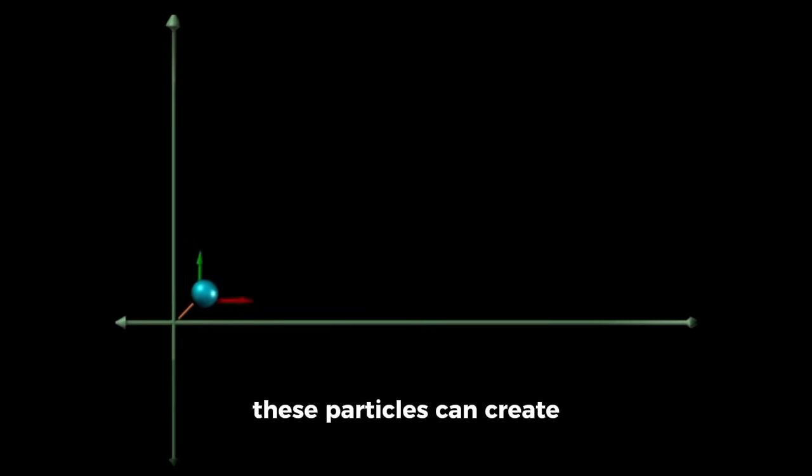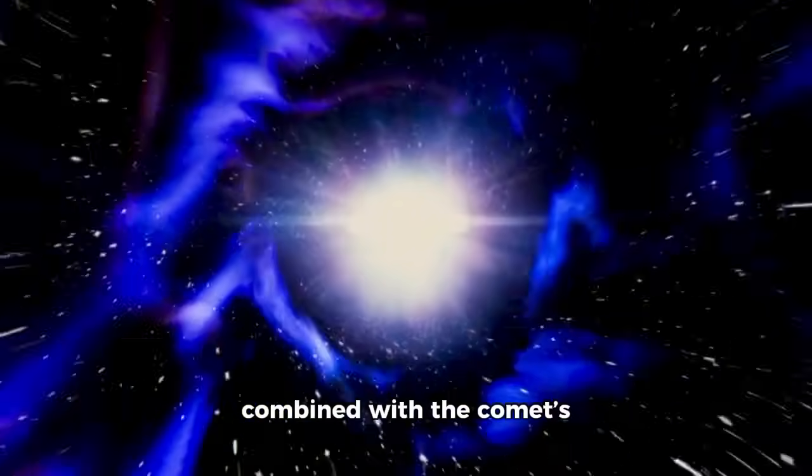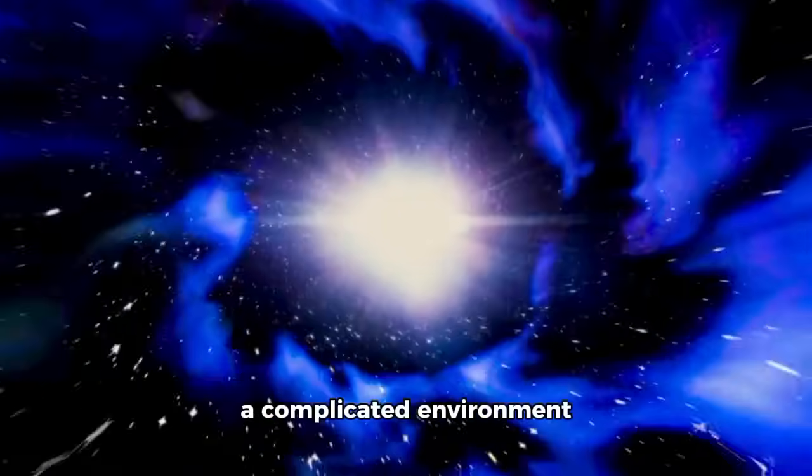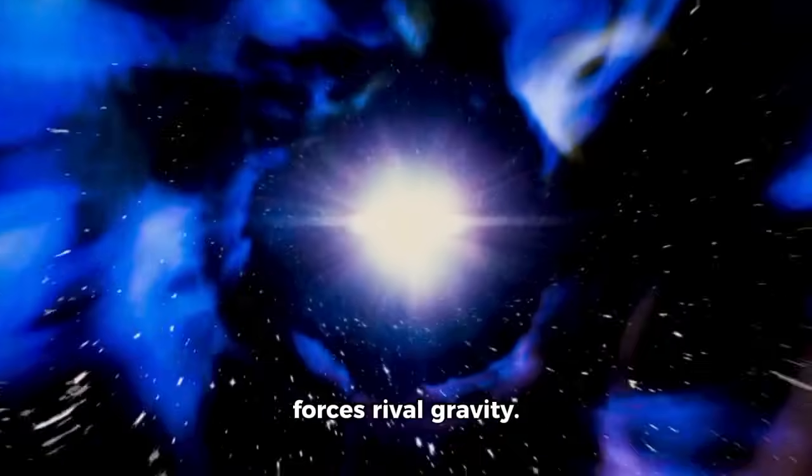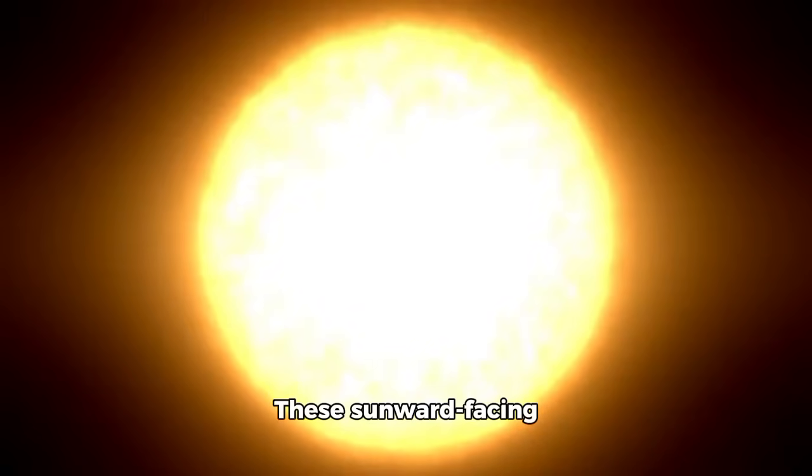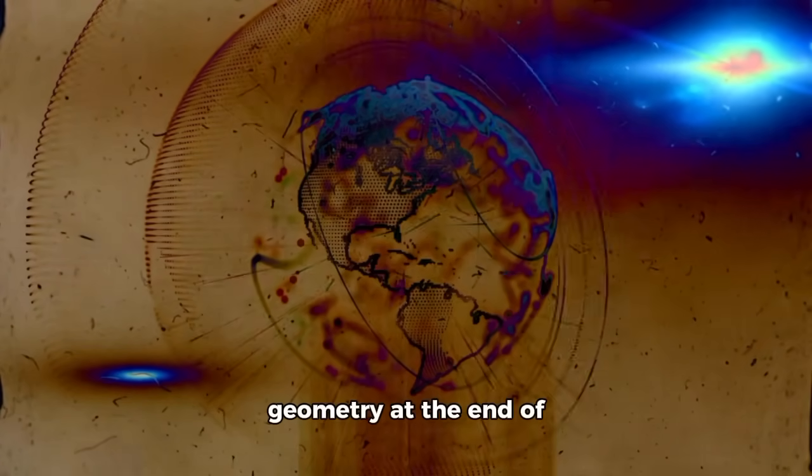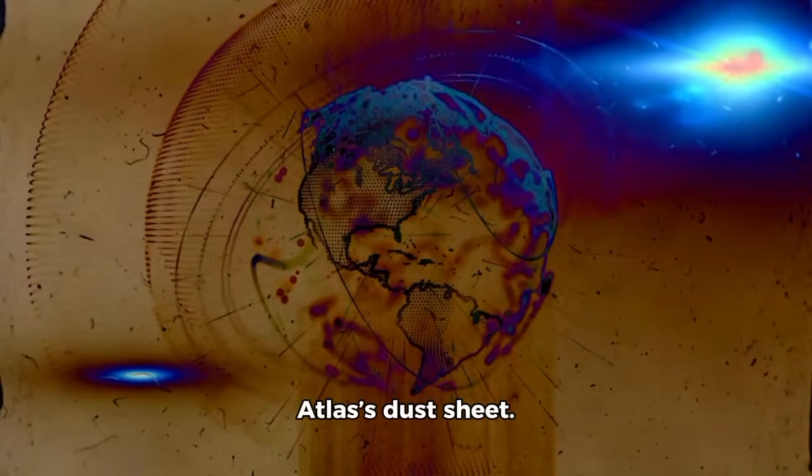From Earth's perspective, these particles can create the appearance of a small sunward anti-tail, visible only when the viewing angle lines up just right. Plasma physicists point out that the rapid expansion of the coma, combined with the comet's high velocity, results in a complicated environment where electromagnetic forces rival gravity. Charged dust grains, caught between the solar wind and the comet's own outflow, can be funneled into narrow streams. These sunward-facing aspects aren't permanent; they depend on the interplay of grain size, charge, and the ever-changing direction of sunlight. The effect is amplified by the unique observing geometry at the end of September, when Earth is almost in the plane of Atlas's dust sheet.